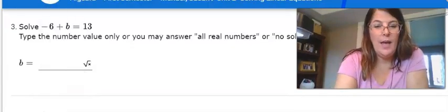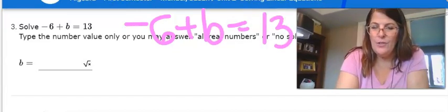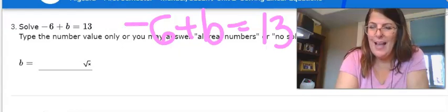So I just want you to be able to see you have negative six that is added to B. So it gets a little confusing because you have to get rid of the negative six, but it's added.